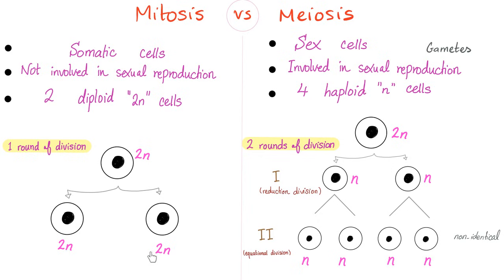Mitosis will give you two diploid cells. Meiosis will give you four haploid cells. Mitosis has just one round of division, but meiosis has two rounds of division. The first one will give you two haploid cells. And then, during the second round of division, they will give you four haploid cells. That's why we call the first round reduction division, because we have reduced the cell from 2N into N. However, in the second round, it's called equatorial division because it's equal to the parent cell, haploid and haploid.